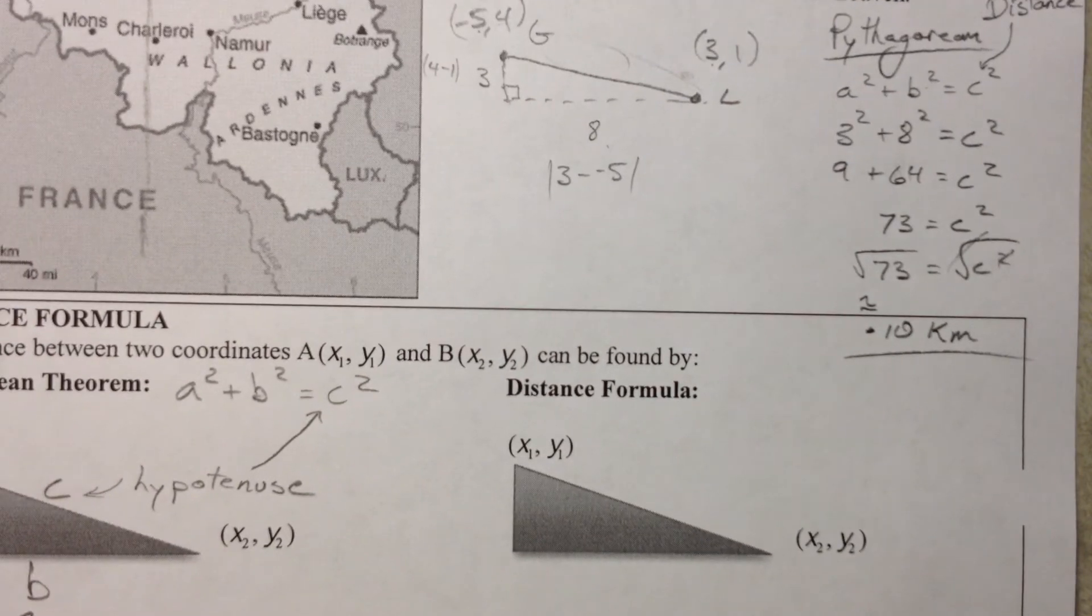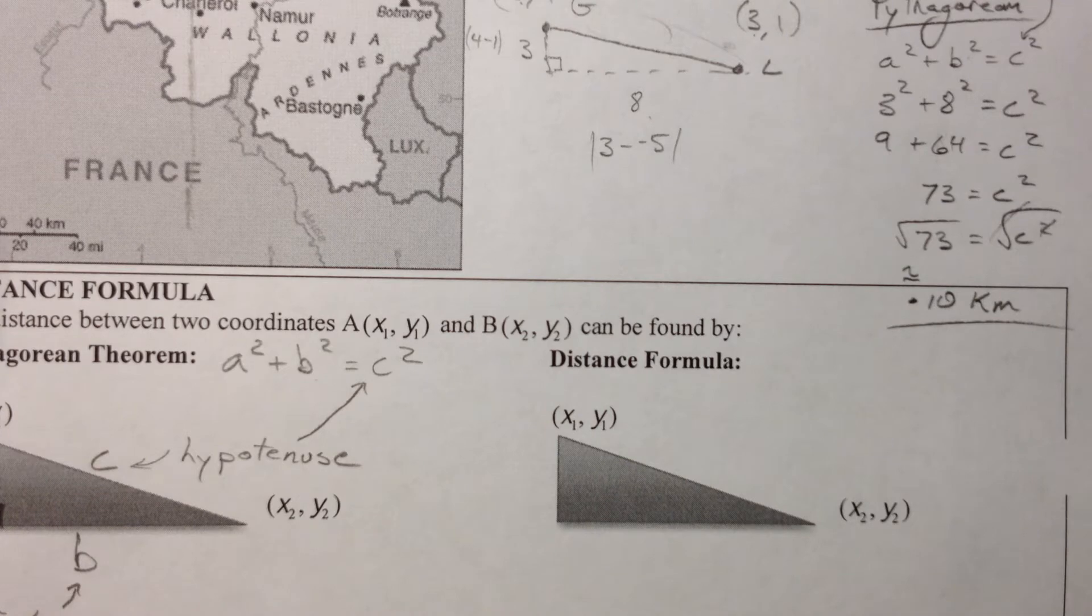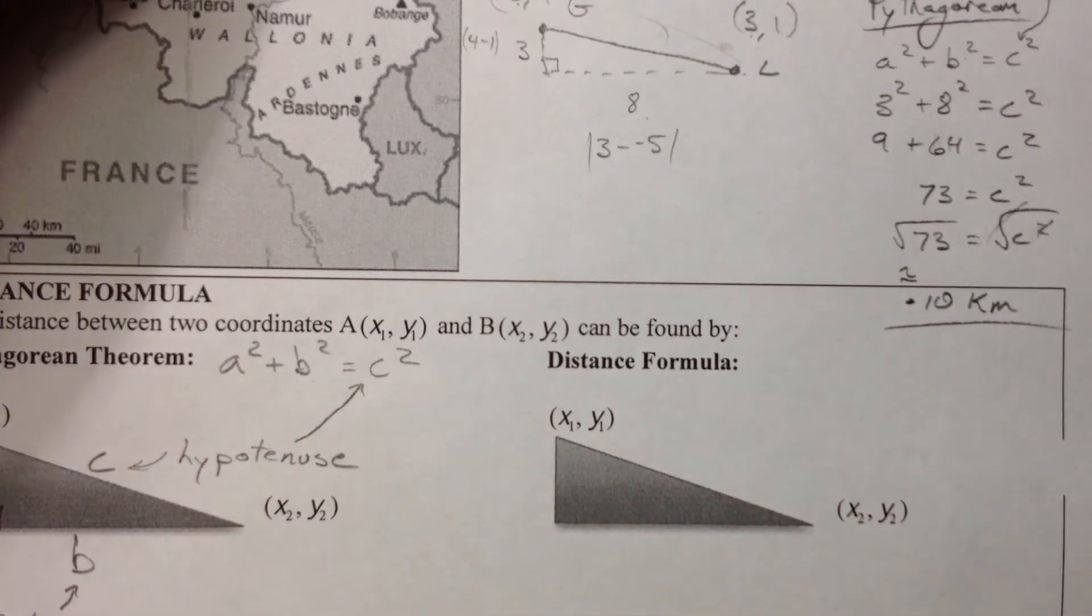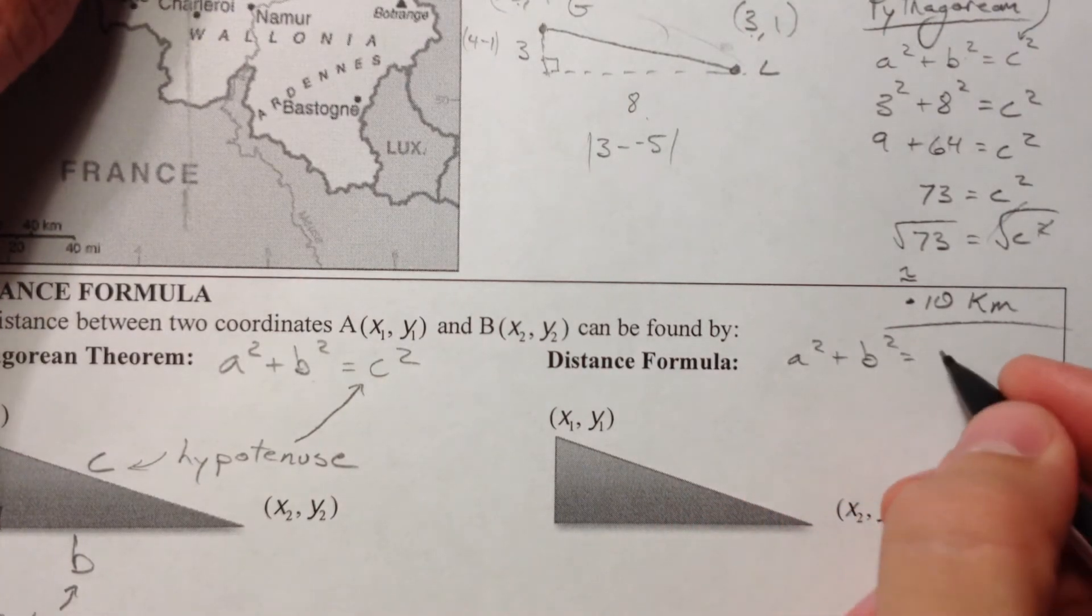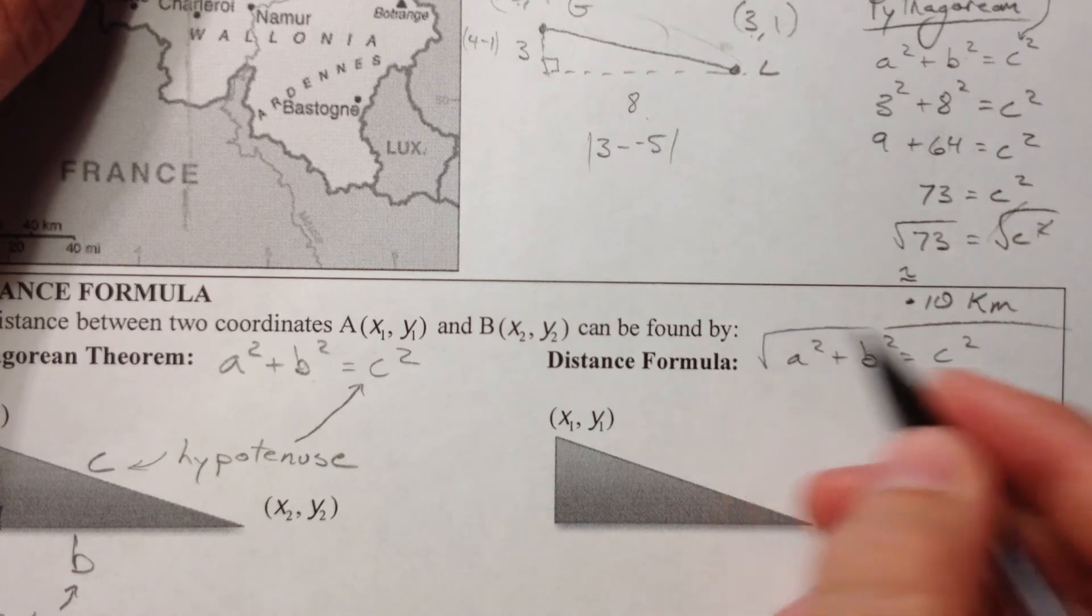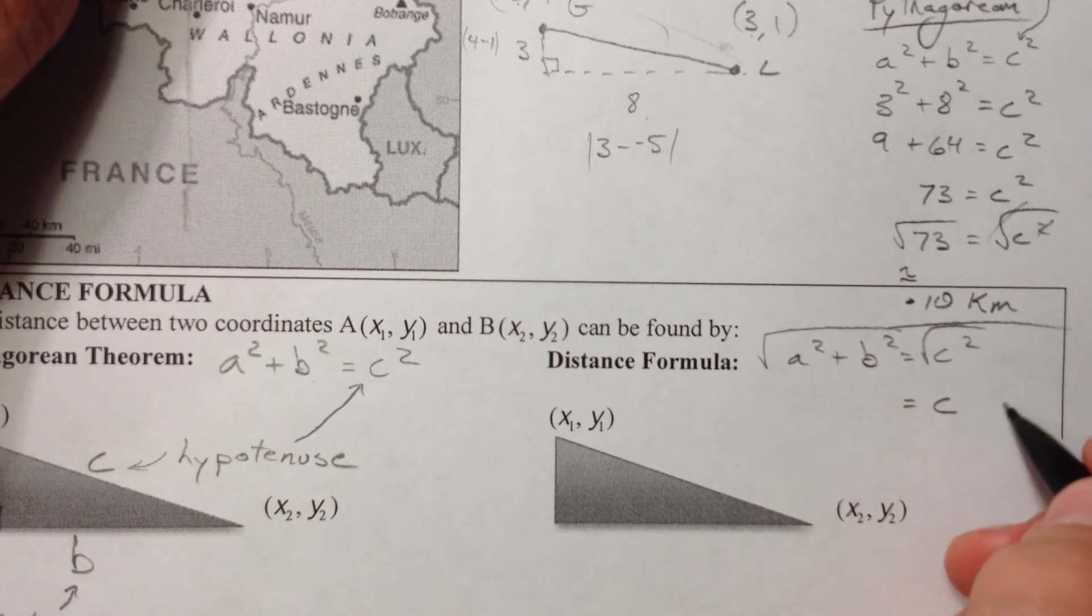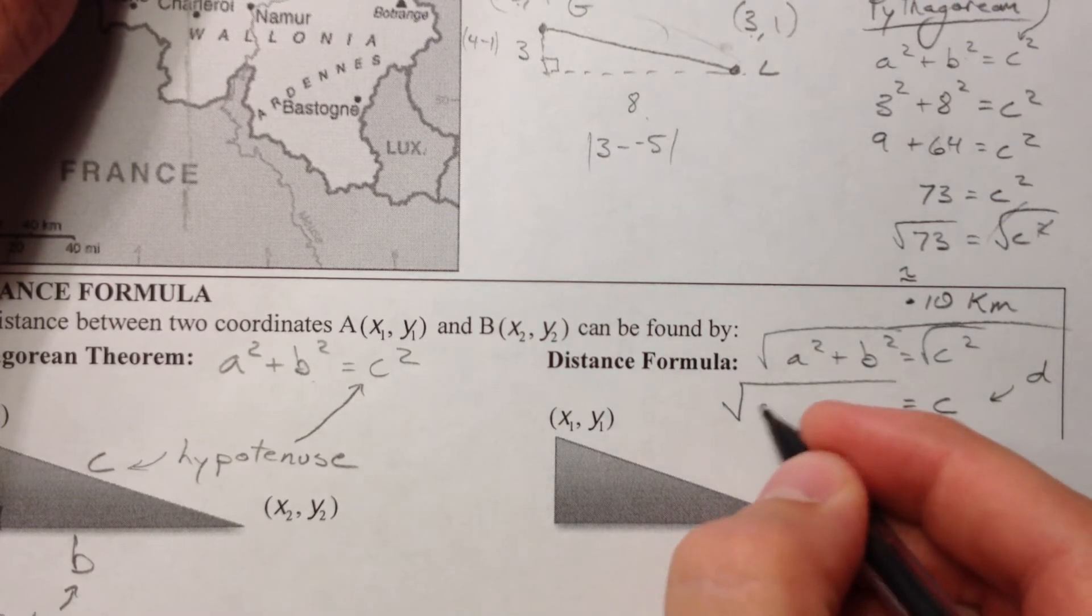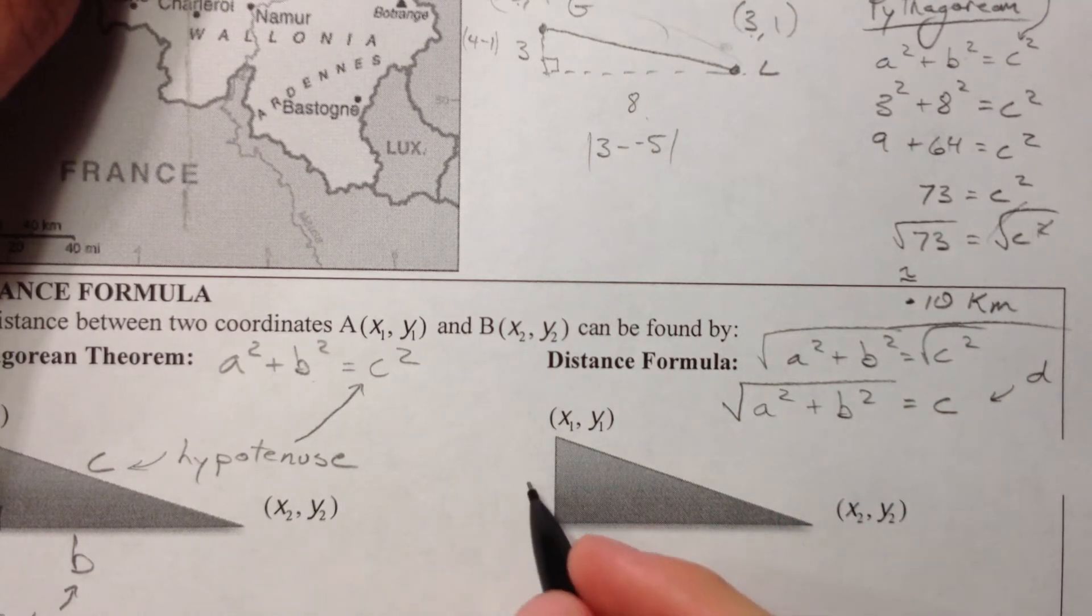So, the distance formula, what they do is they change this a squared plus b squared equals c squared slightly. And by that, I mean, all they do is they take the square root of it. They say a squared plus b squared equals c squared. They take the square root of it. So you get c. And instead of c, it's really d. As in distance.